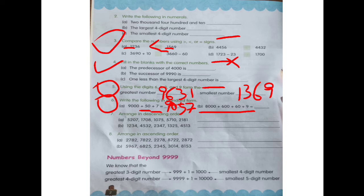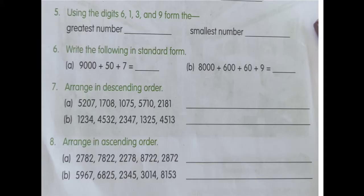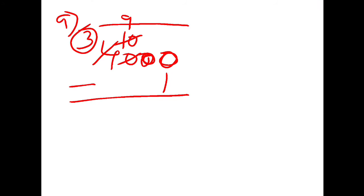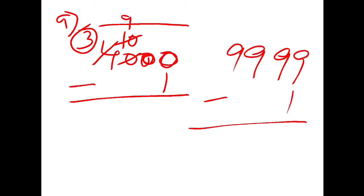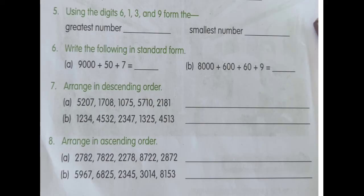Similarly, we will move on to the next question: the successor of 9,990. The largest 4-digit number is 9,999. We can easily find the successor. Now we will get to the 7th question.